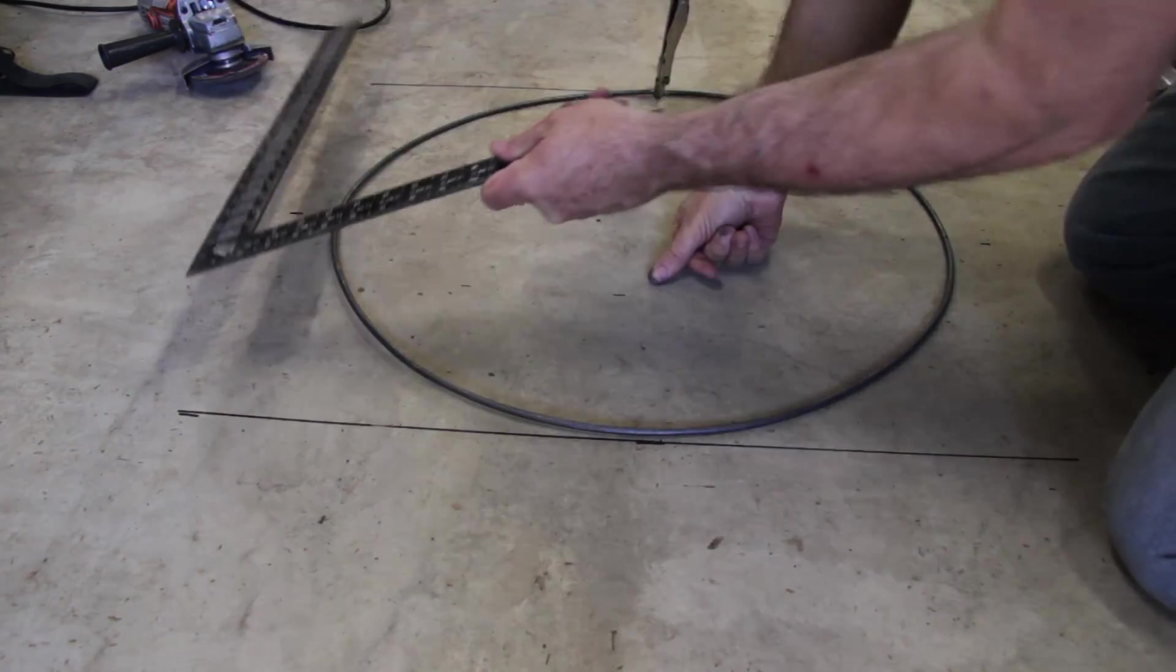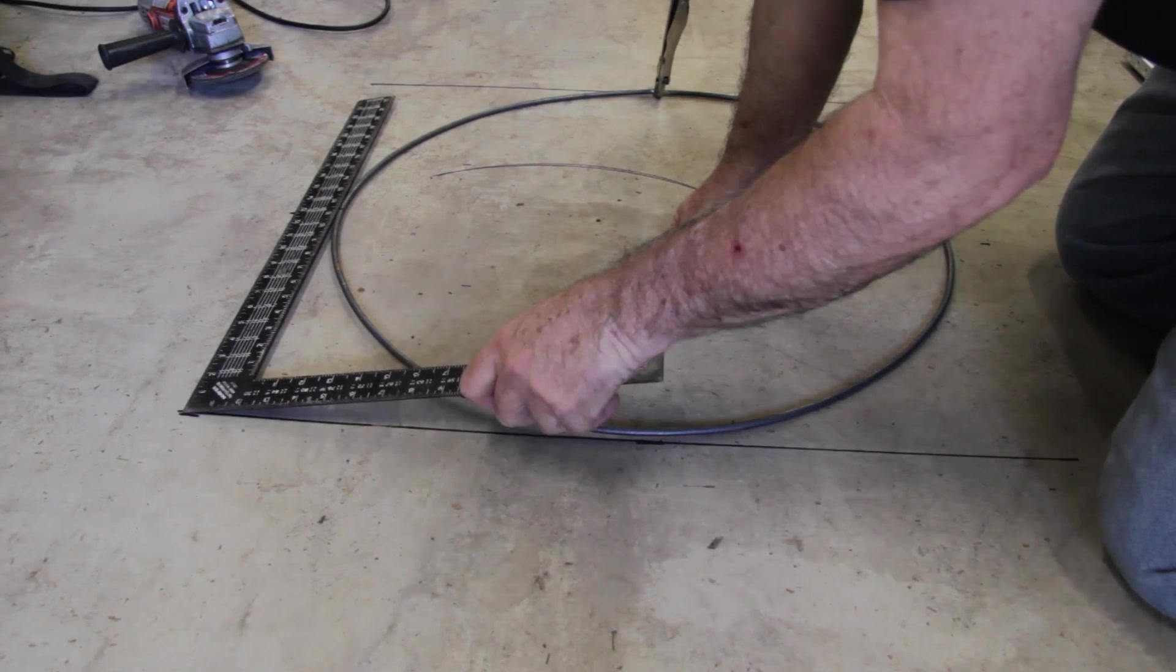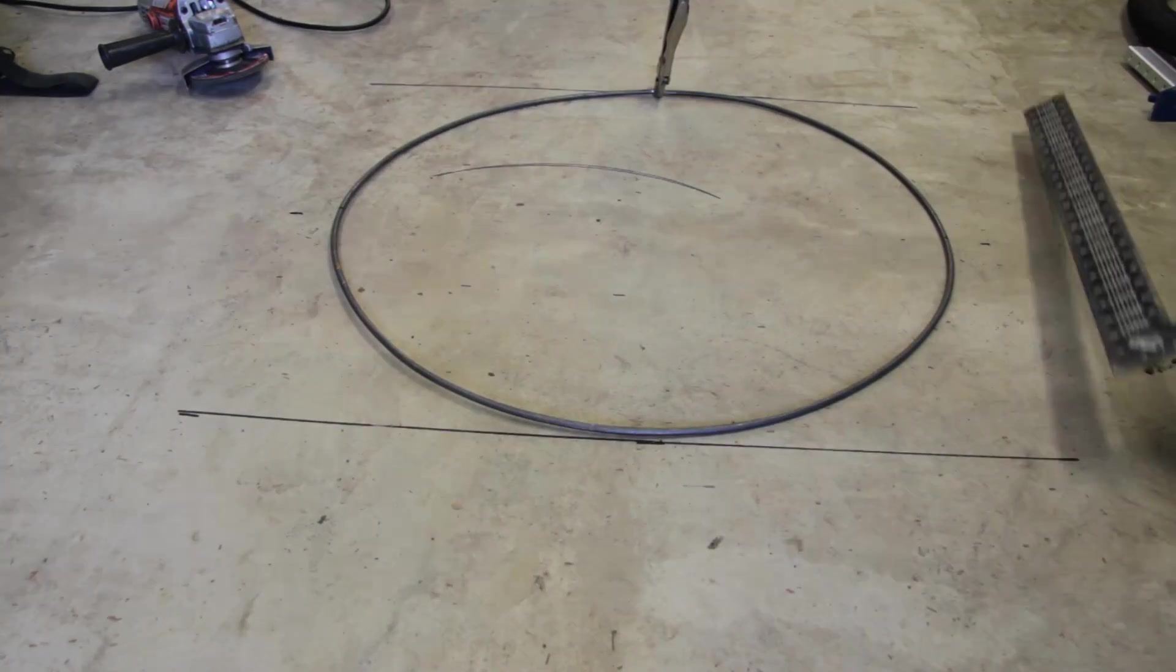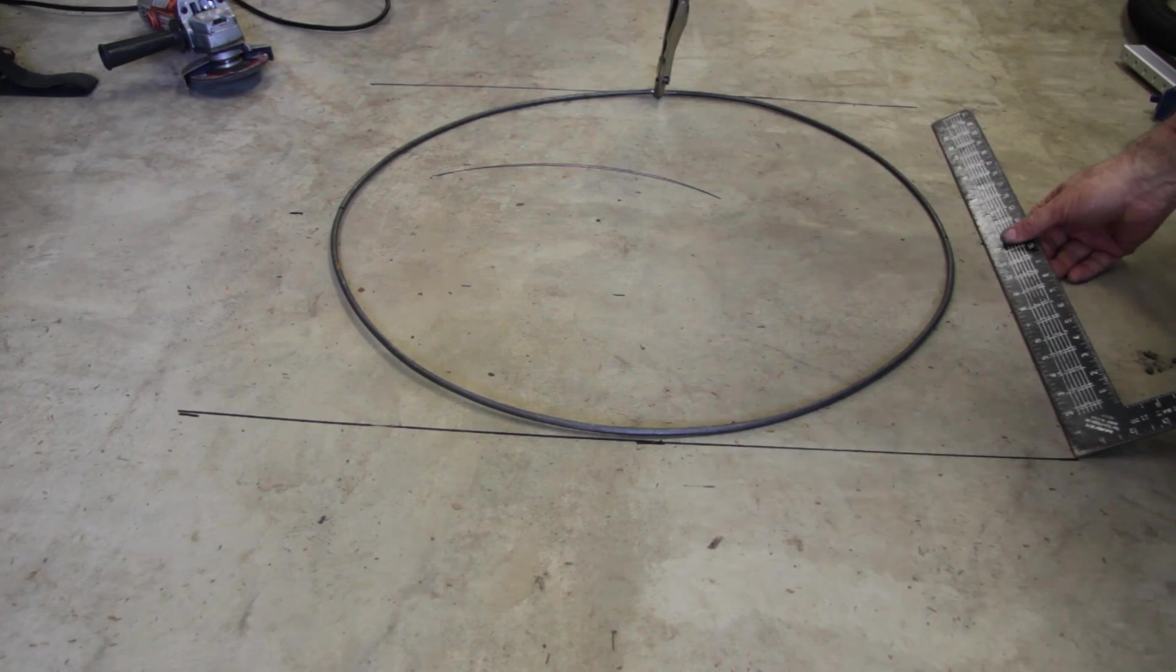And then all I have to do is take my square and measure exactly half of that. Put some marks on the cement floor. Then I can take my square and mark exactly half of that.